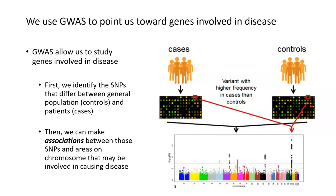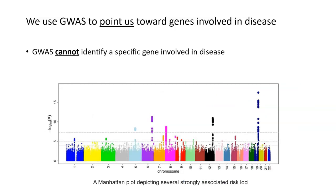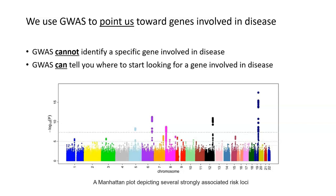These SNPs are found in the cases group but not the control group, which suggests there's some variation in the people who have the disease at these locations. We can start to look at these particular genetic locations on chromosomes 6, 12, and 19 to look for genes that might be involved in disease. GWAS can't identify a specific gene involved in disease, but it tells us where to start looking — in this case, chromosomes 6, 12, and 19.